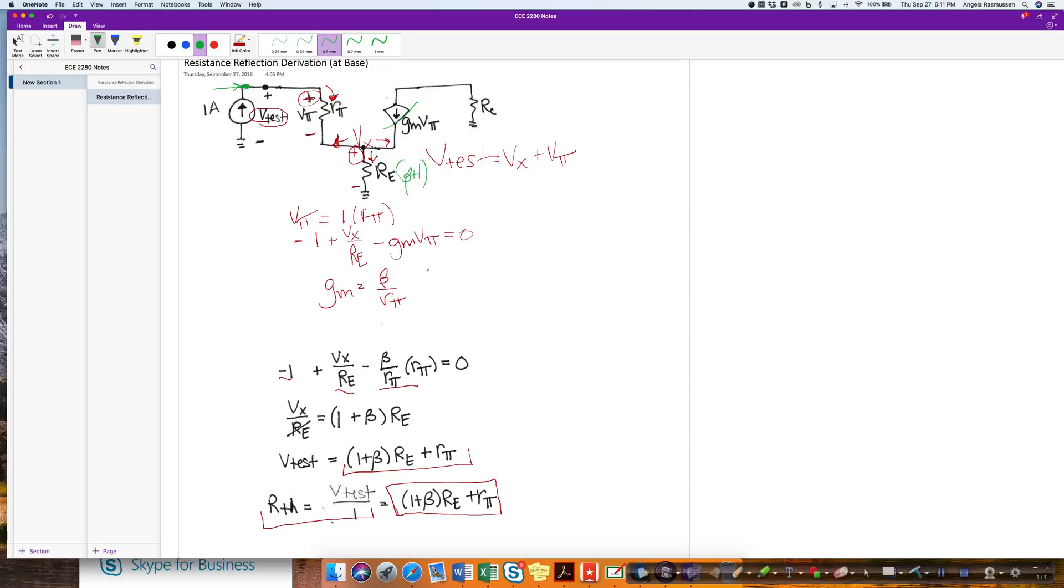That's being accounted for when I multiply all of the resistors in the emitter side by beta plus 1.